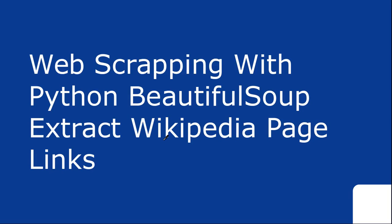Hello friends, this is another video tutorial on web scraping with the help of Python's BeautifulSoup library. In this tutorial we are going to see how we can extract a Wikipedia page and inside that Wikipedia page, whatever inbound links are available — which redirect to another Wikipedia page — we are trying to extract. Let's see what these inbound links are.